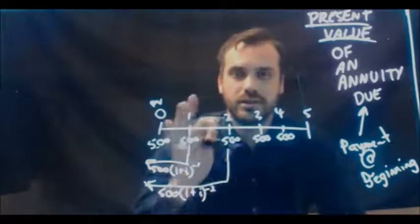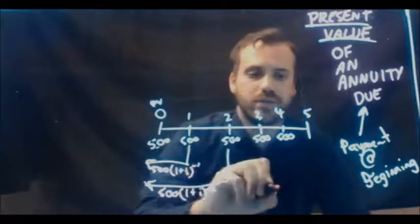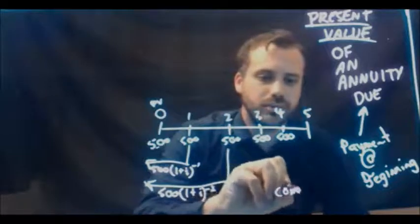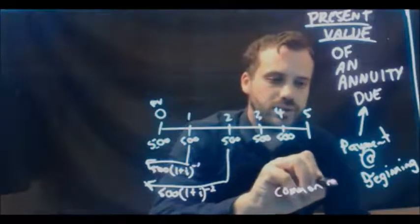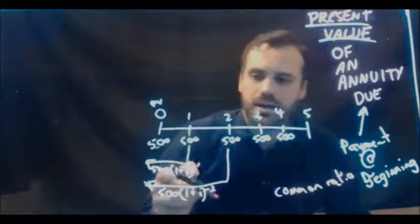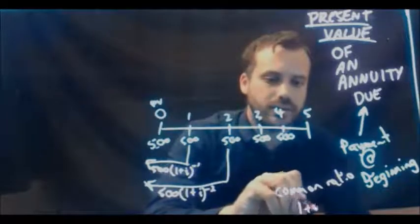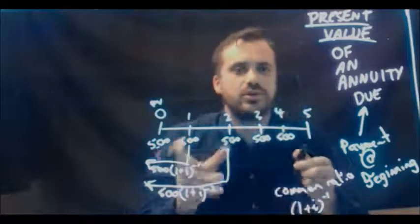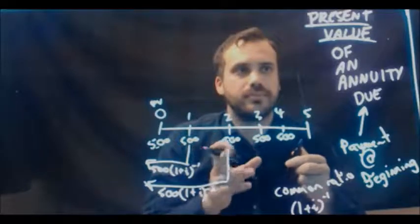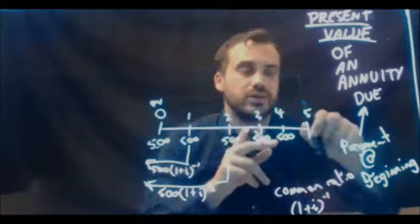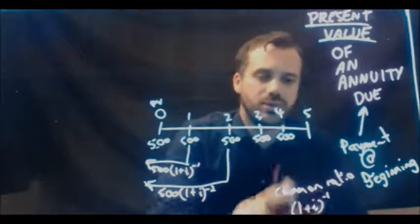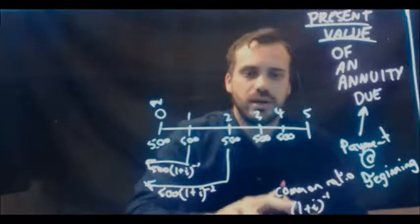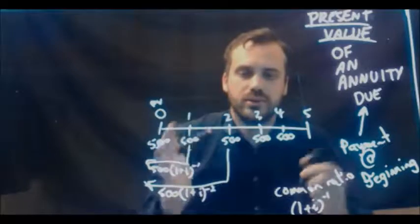This $500 is going to be $500 times 1 plus i to the negative 2. And so on, $500, 1 plus i to the negative 3. $500, 1 plus i to the negative 4. Now it's important for you to realize that our common ratio is 1 plus i to the negative 1. Now you saw this before when you did the present value of just a plain annuity. You've seen this common ratio before.